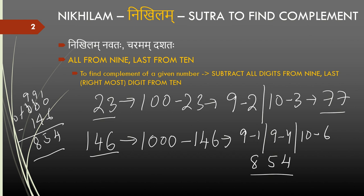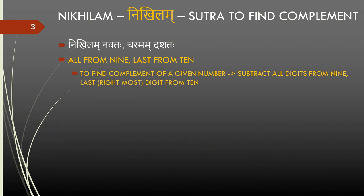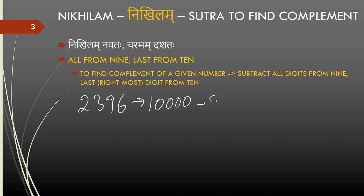So this is the rule to calculate complements easily: all from 9, last from 10. Let's take another example. Just to clarify, if I have a bigger number 2396, which means I am trying to calculate 10000 minus 2396. Applying the rule: 9 minus 2 gives me 7, 9 minus 3 gives me 6, 9 minus 9 gives me 0, and 10 minus 6 gives me 4.